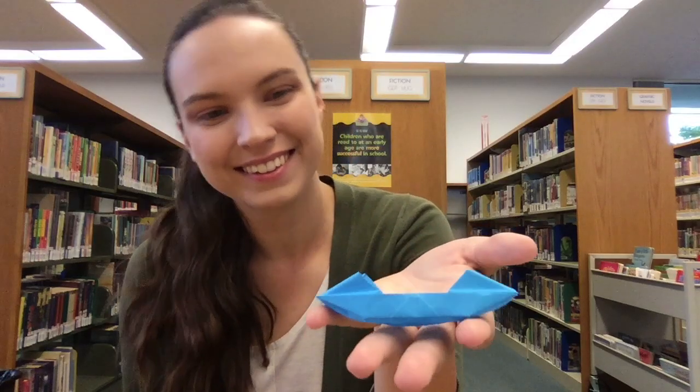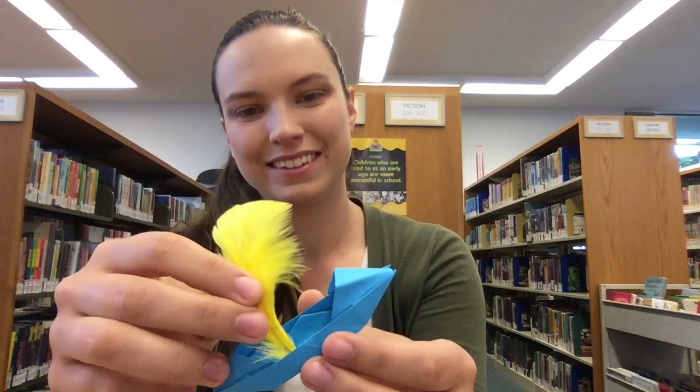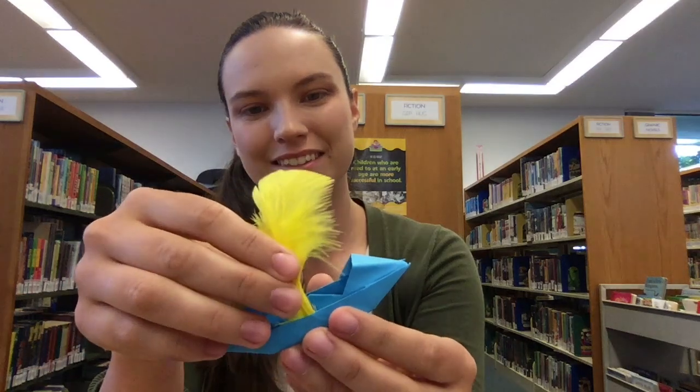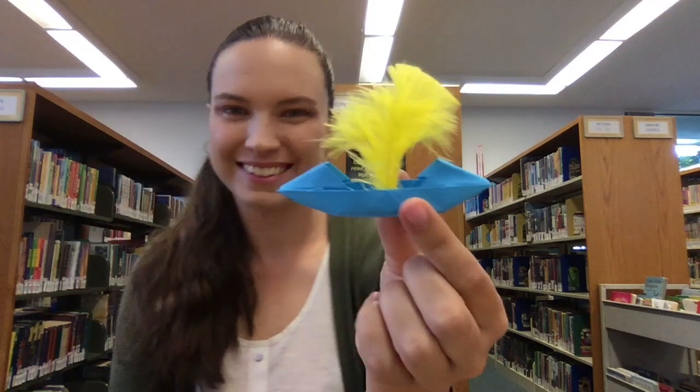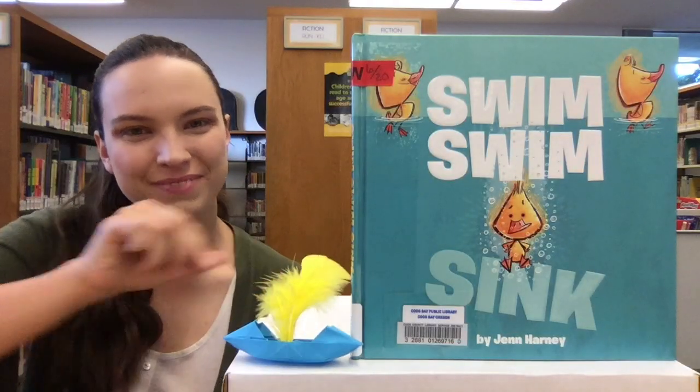Hmm, I think there's one thing missing. A sail! Use a feather and stick it in one of the folds of the boat. Now your boat is ready for lots of adventures, just like Tiny Duck.